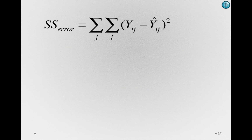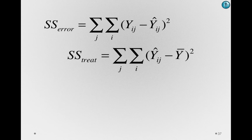Here is the sums of squares for error formula. This is an individual's deviation from their actual score — the Y_IJ — minus the predicted score, their group's mean. The sums of squares for treatment shares a common quantity with this: the predicted score for an individual, that is, an individual's group mean.